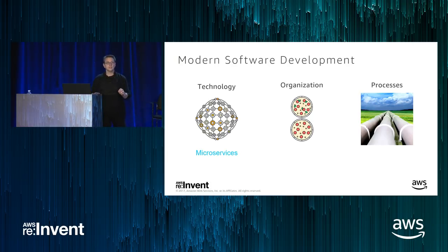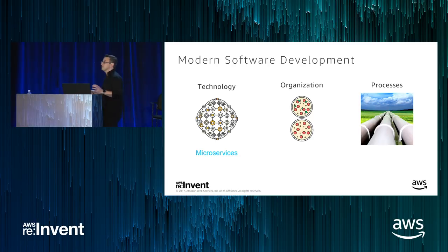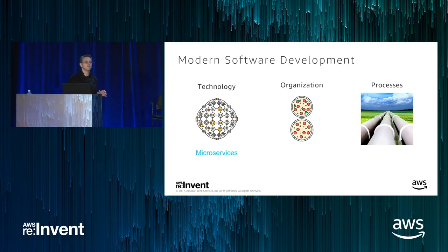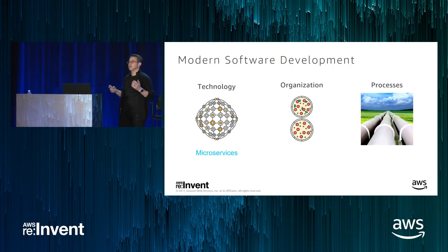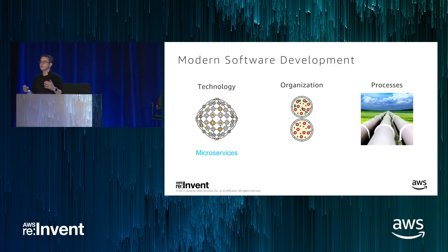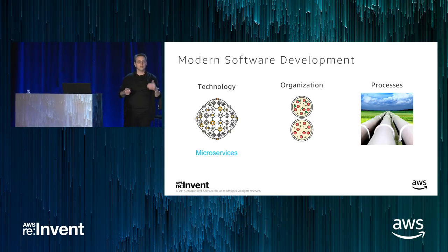In 2001, Amazon.com was a big monolithic application with big monolithic development teams. We were facing challenges around development and deployment velocity — it was taking us time to get new functionality developed and deployed into production, due to the size and complexity of the application. We knew that if we were going to continue to scale, we would need to do something different, and so we started to tease apart our monolithic application well before the term microservices was coined.